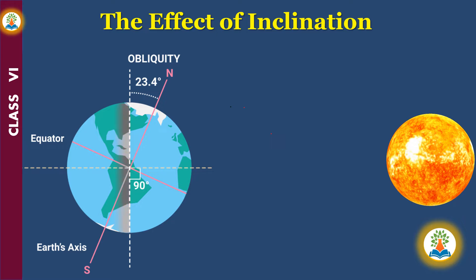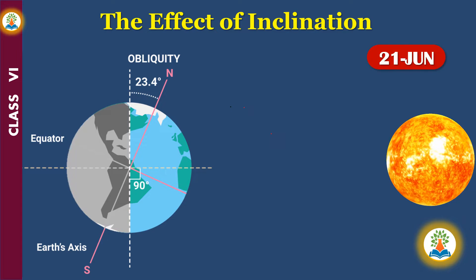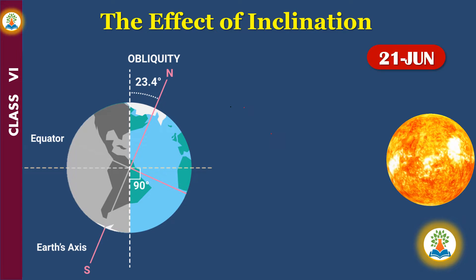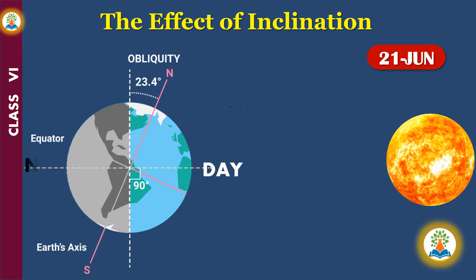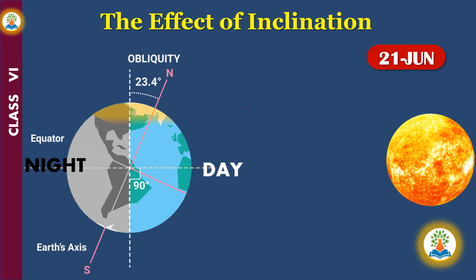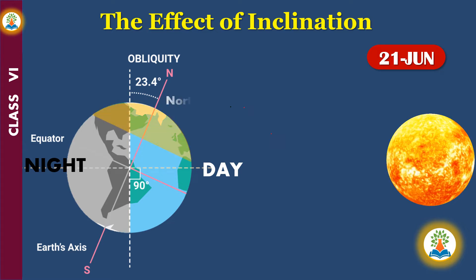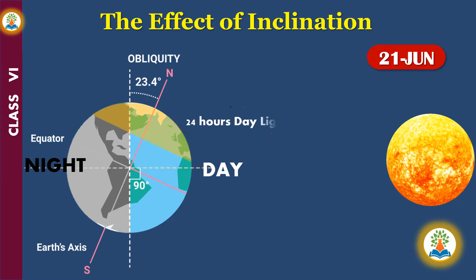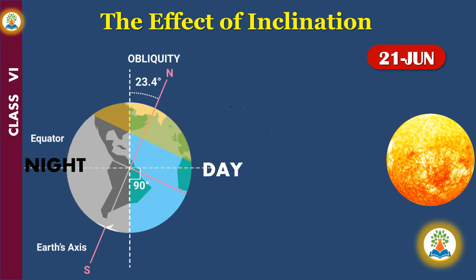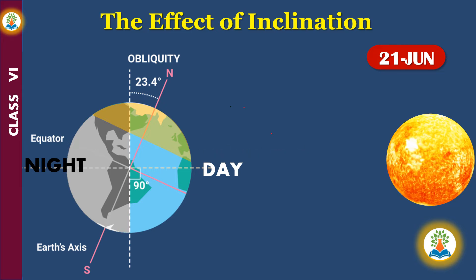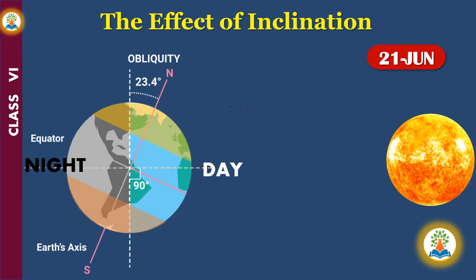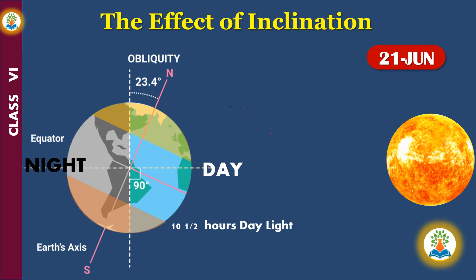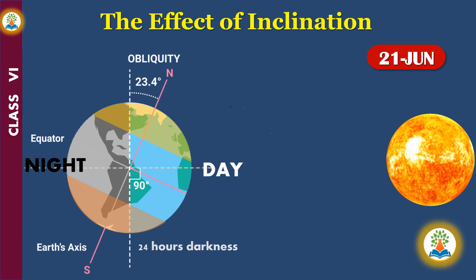This is Earth's position on 21st June, where the part of Earth facing the Sun is having day and the opposite side is having night. The North Pole is having 6 months of daylight and the South Pole is having 6 months of night. The number of hours of daylight get reduced from North Pole to South Pole.